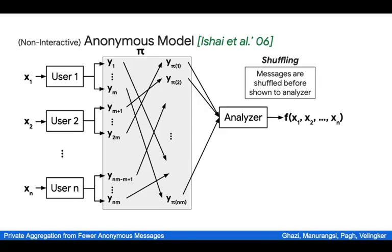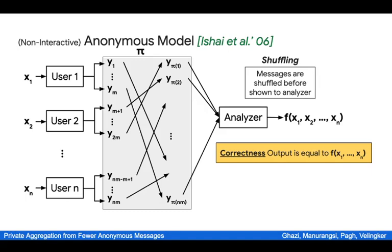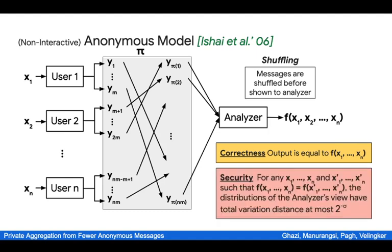As is usual in scale computation, there are two main properties we need from the protocol. First is correctness: we want the analyzer's output to be equal to f of x_1 to x_n. Second is security. Here we use the information-theoretic notion of security, which states that for any two sets of inputs x_1 to x_n and x_1' to x_n' such that f of x_1 to x_n equals f of x_1' to x_n',